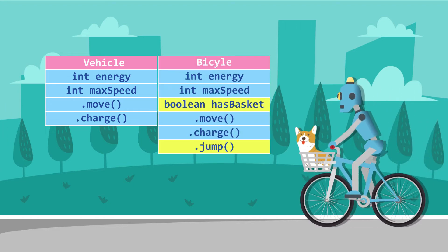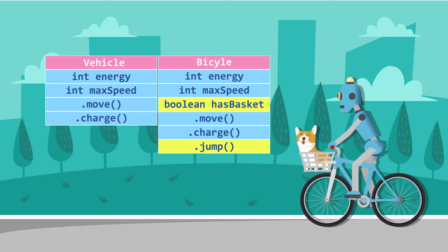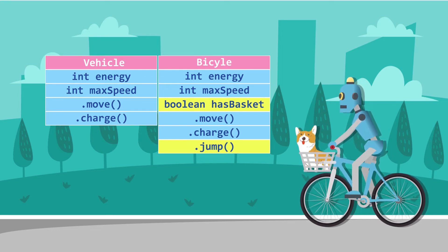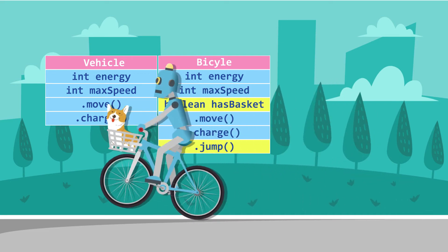A bicycle is powered by the rider. It has a maximum speed of 14 miles per hour. It may or may not have a basket. It can move, charges by feeding the rider, and can jump.